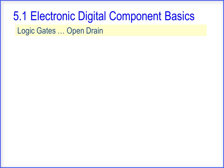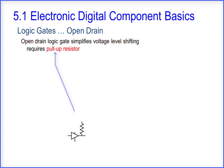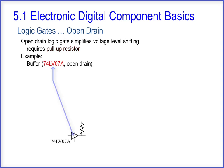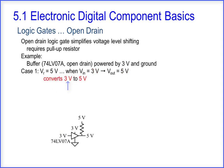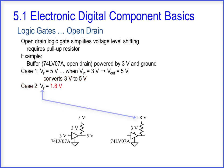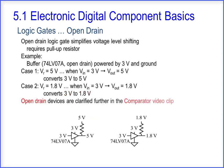Some logic gates are available with an open drain option. An open drain logic gate simplifies voltage level shifting, but requires a pull-up resistor. Using the 74LV07A buffer powered by 3 volts and ground as an example: in Case 1, with VR at 5 volts, when VIN equals 3 volts, VOUT equals 5 volts — converting the 3-volt input to a 5-volt output. In Case 2, with VR at 1.8 volts, when VIN equals 3 volts, VOUT equals 1.8 volts. Open drain devices are clarified further in the comparator video clip.